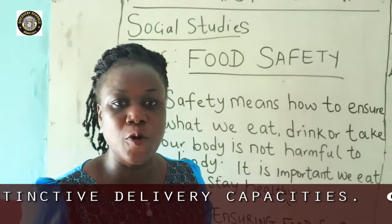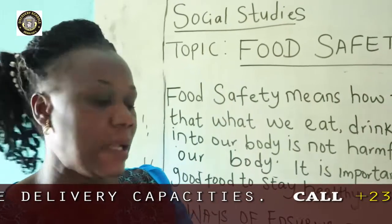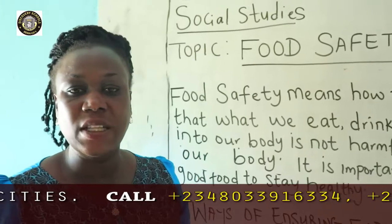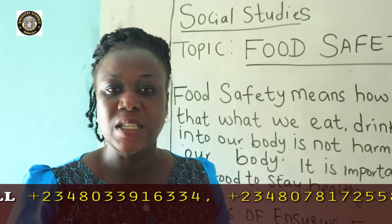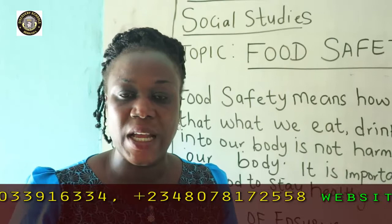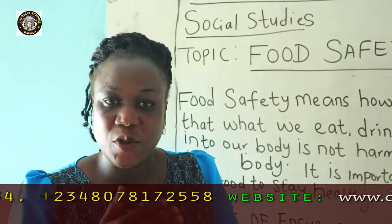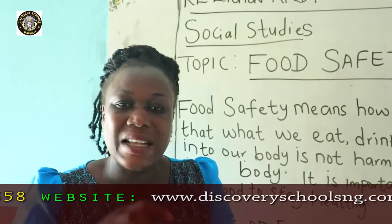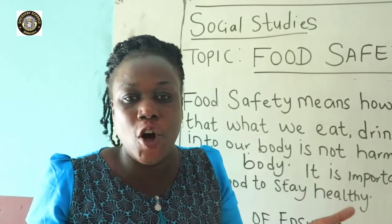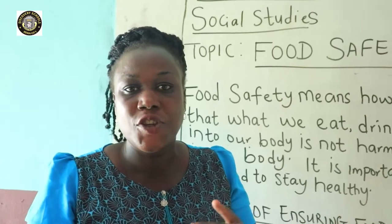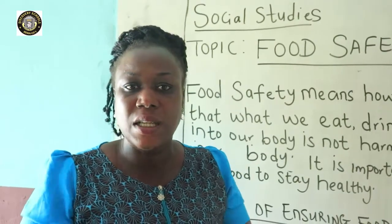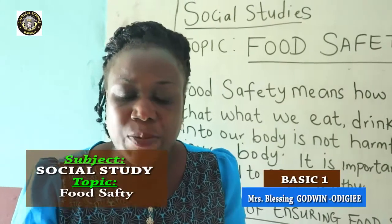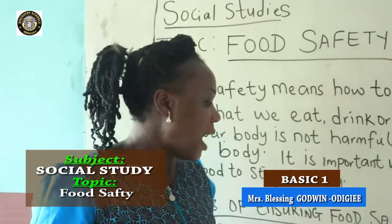Ways of ensuring food safety. Number one: read the food label. You must ensure that you read the food label to know the spoilage process. You have to check for the expiring date. Most of the food that is in cans, like your sardines, your Titus fish, the milk that you take — you must ensure that the expiring date is correct.